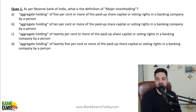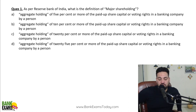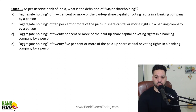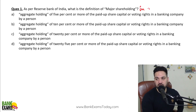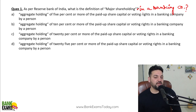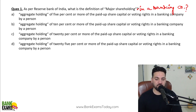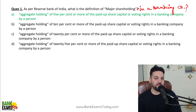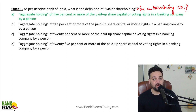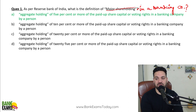Question number one: as per the Reserve Bank of India, what is the definition of major shareholding in a banking company? Major shareholding means if the aggregate of 5% or more of paid-up share capital or the voting rights in a banking company is held by a person — that is known as major shareholding in a banking company. So if you have 5% or more shareholding or voting rights, you are holding a major shareholding. This definition is really, really important.